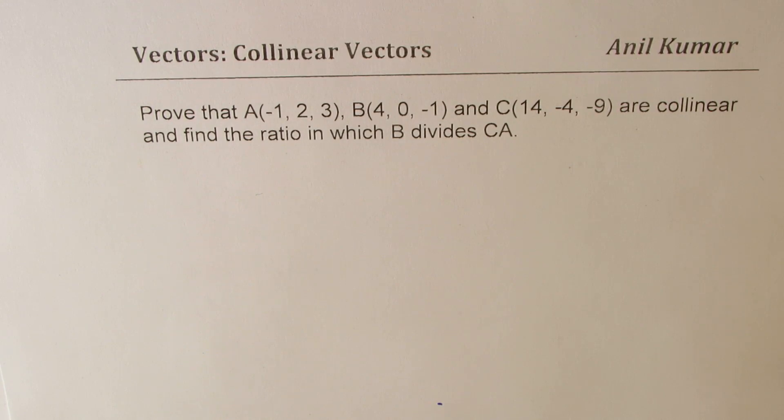Prove that A(-1, 2, 3), B(4, 0, -1) and C(14, -4, -9) are collinear and find the ratio in which B divides CA.